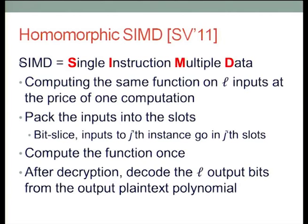That gives you your SIMD operation — single instruction, multiple data. Smart and Vercauteren suggested that possibility: you want to compute the same function on L inputs at the price of one computation, so you pack your inputs into the slots in a bit-sliced implementation. All the inputs to your first instance are placed in the first slot of all your ciphertexts, all inputs to the second instance in the second slot, and so on. When you do your function computation, you compute L instances of the same function on different data all at once.